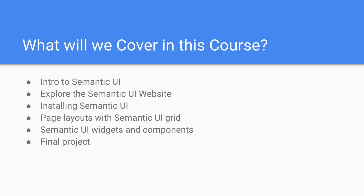Then we'll move to installing Semantic UI. Then we'll learn about how to properly structure our pages with the Semantic UI grid. For those of you who have used Bootstrap before, you'll see Semantic UI is similar to that, especially when it comes to the grid layout system. After this, we'll go into some individual Semantic UI widgets and components. We'll show you how to examine them, select the options you want, choose them and then copy and paste them into your code and customize them further. Then we'll wrap this section up with the final project, which is going to take the majority of the time and will put everything that we've learned in these intro sections to the test.